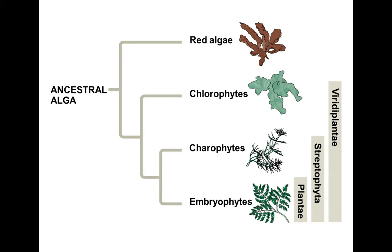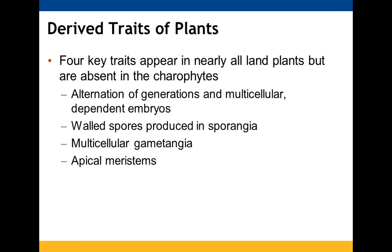This shows the relationship with the red algae, the chloroplasts, the charophytes, and the embryophytes — our plants. We're going to be focusing on plants and seeing what traits have evolved over time as they've colonized land. Derived traits are those present only in plants but not in the charophytes.